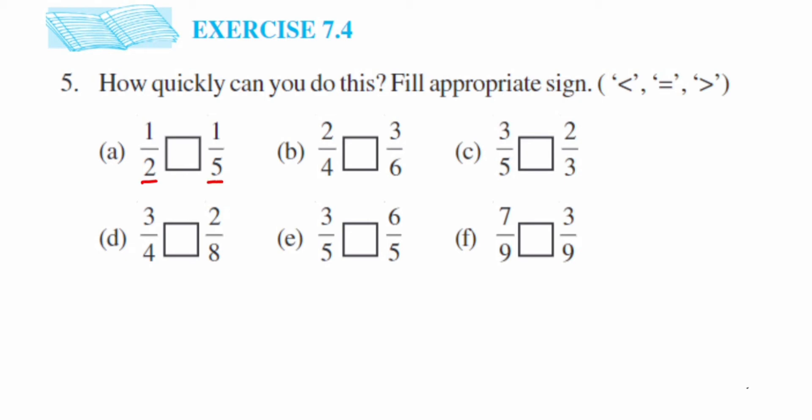The first one is 1 by 2 and 1 by 5, so we have to compare them. You can see that denominators are different, numerators are same. So we know that in unlike fractions, when numerators are same and denominators are different, smaller the denominator, greater will be the fraction. So 2 is less here, so 1 by 2 will be greater than 1 by 5.